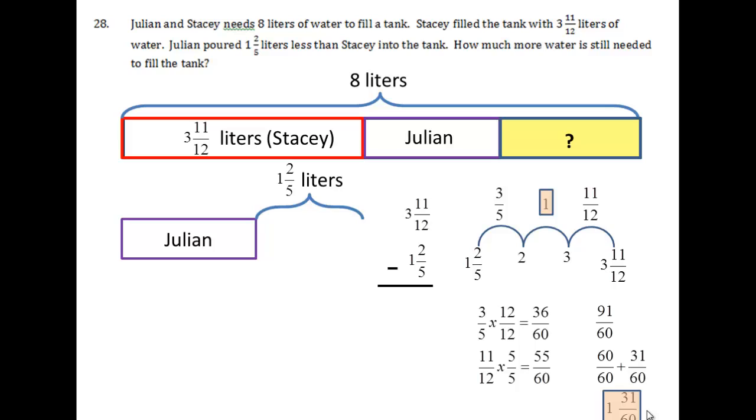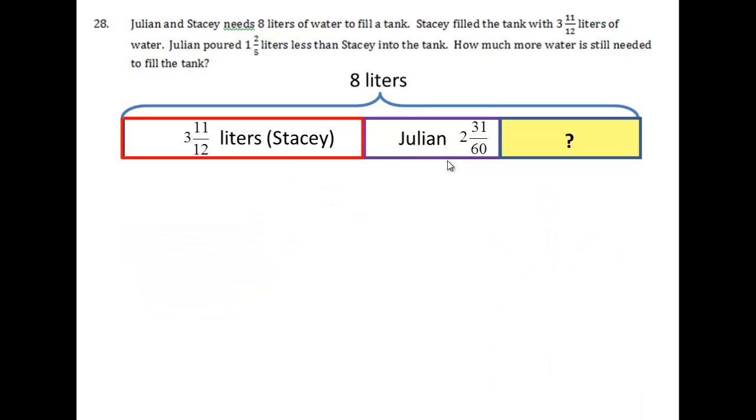Final, final step for this part. Don't forget your 1 whole up here. You have to add your 1 whole and your 1 and 31 sixtieths. And that 2 and 31 sixtieth liters of water is how much Julian put in. So we're one step closer to solving this problem. We can actually put it into our bar model. All right, we got Stacey, we got Julian, and we're almost done.